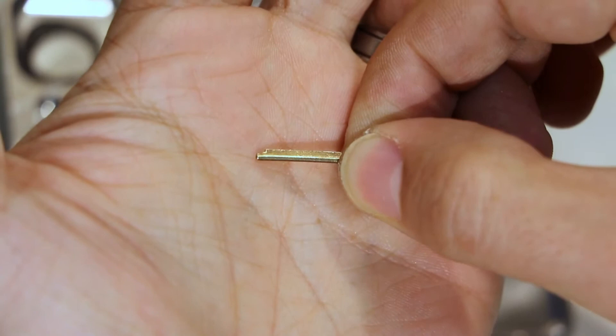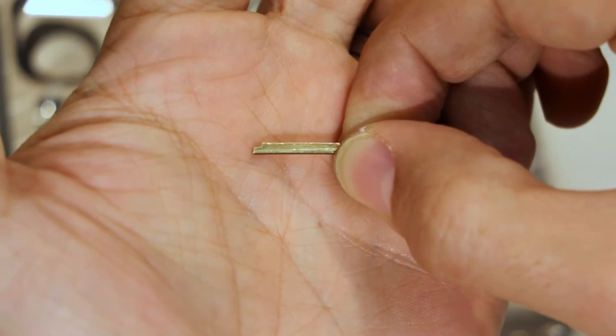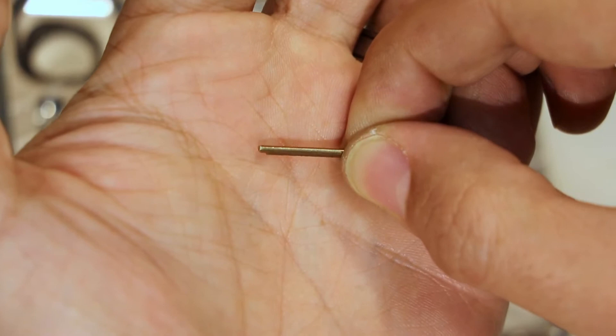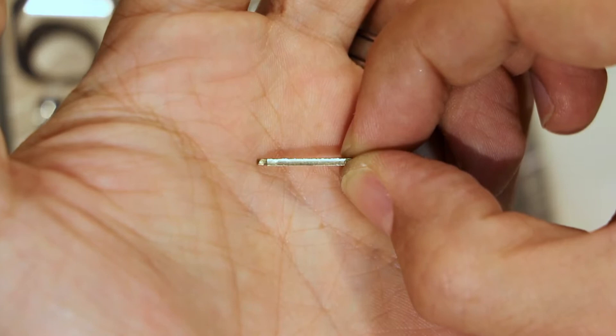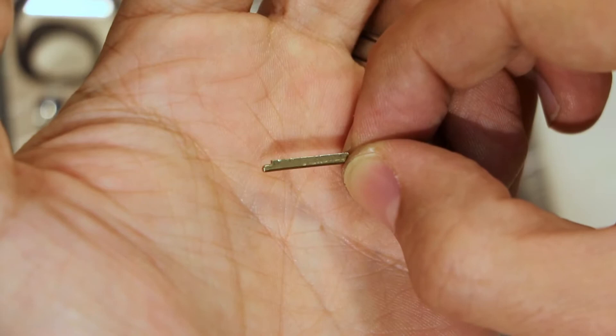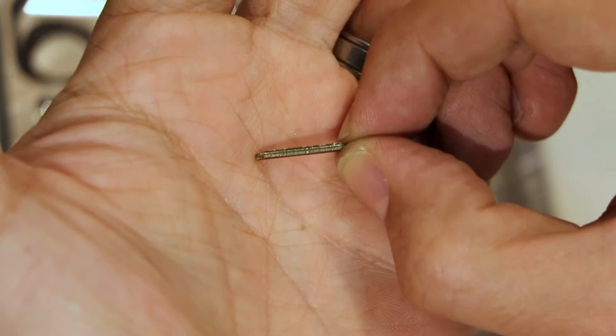But if you look at the color of the metal, it is all kind of this darker color, right? A little bit of oxidation. And here it's shiny. You see how shiny that is? And you can actually see like machine marks on there. The sidebar has been filed down. It has been made shorter on purpose.